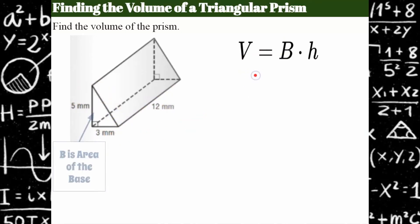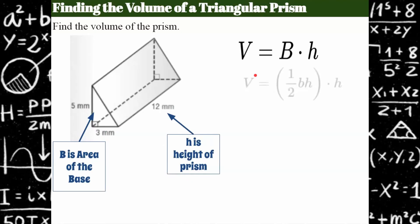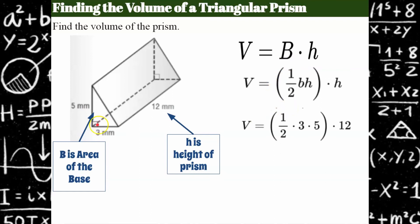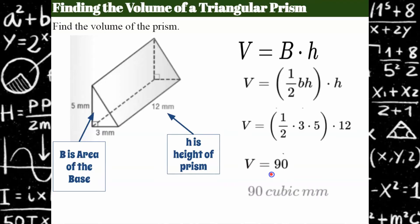The big difference here is when I go to find the area of my base it's not length times width or base times height because I have a triangle base. So I have to alter my formula a little bit. I identify the base and the height, and since the area of this base is a triangle it's one-half the base times the height. The base and height of the triangle are 3 by 5 and the height of my prism is 12. I multiply and get 90 cubic millimeters.